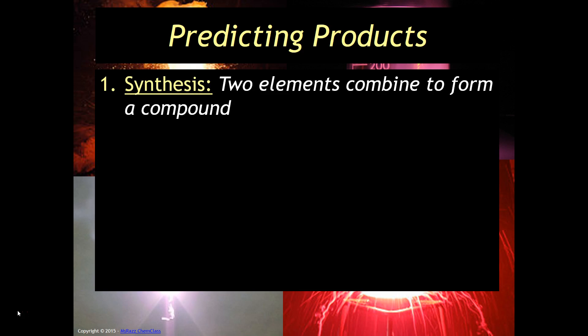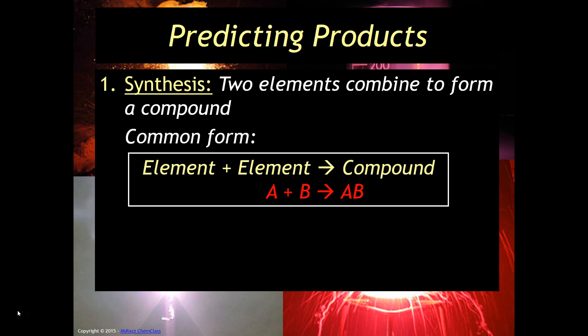So today, we're going to predict products for synthesis reactions. You can identify a synthesis reaction because you usually will have two elements that combine to form a compound. The common form would be an element plus an element gives you a compound AB.